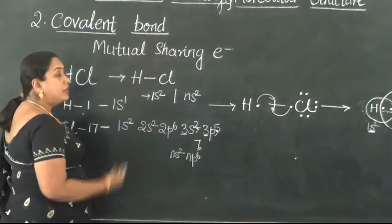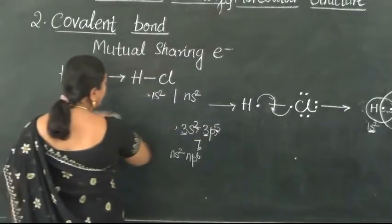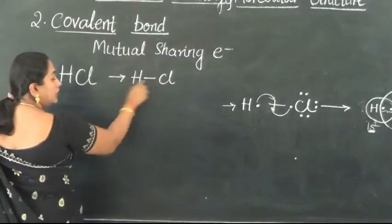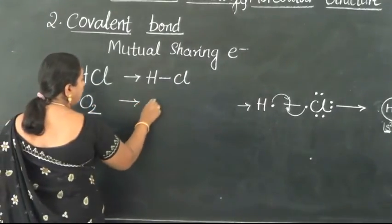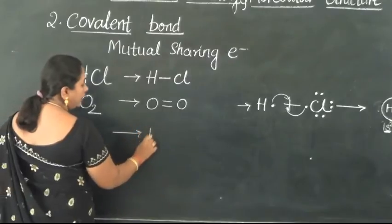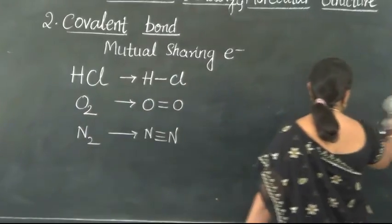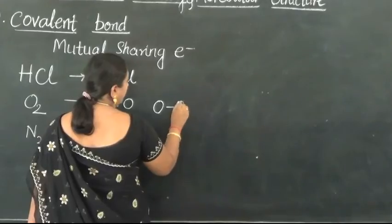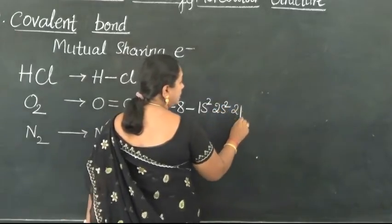Based on the number of electrons that can be donated, we have different types of covalent bond formation. We learned the single covalently bonded molecule HCl, the Oxygen molecule bounded by 2 covalent bonds, and the Nitrogen molecule bounded by 3 covalent bonds. Let us revisit how Oxygen has 2 covalent bonds. Oxygen has atomic number 8 and electronic configuration 1s2, 2s2, 2p4.